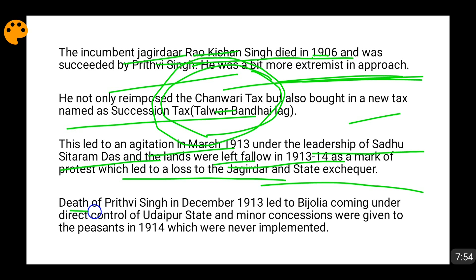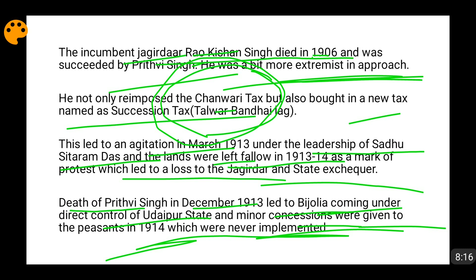Prithvi Singh died in December 1913, and a minor heir was placed on the Jagirdar's throne. Since he was a minor, the Bijouliya Jagir came directly under the control of the Udaipur state. Some minor concessions were given to the peasants in 1914 because they had stopped cultivating their land and no taxes were coming in. However, these concessions were never actually implemented. This marked the end of the first phase of the Bijouliya movement.